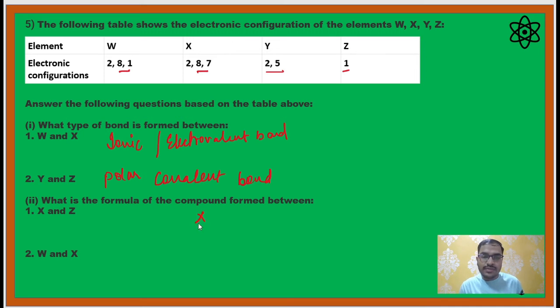Now you are asked to write the formula of the compounds formed between X and Z. So what is the valency of X? Valency of X is minus 1 because it will accept one electron, and valency of Z is 1. So if you cross multiply, you will form the compound XZ.